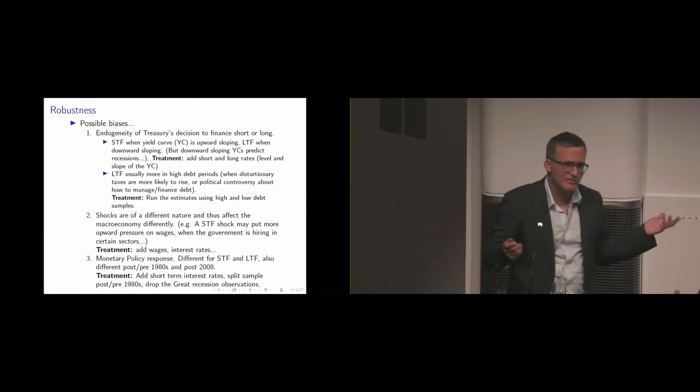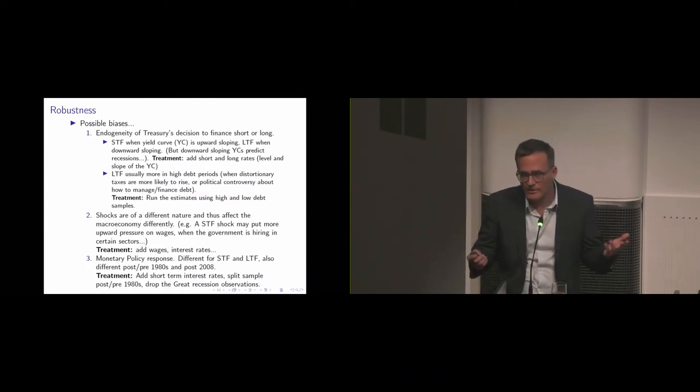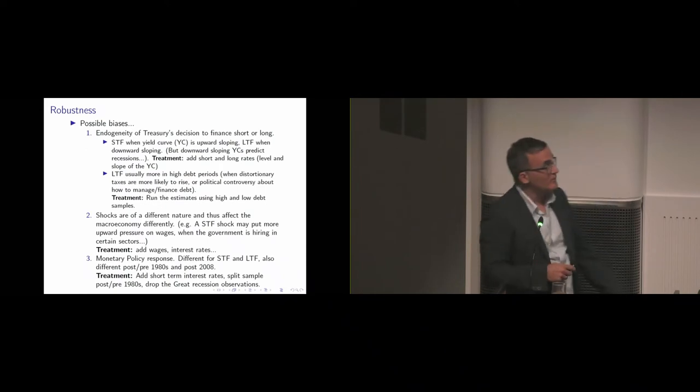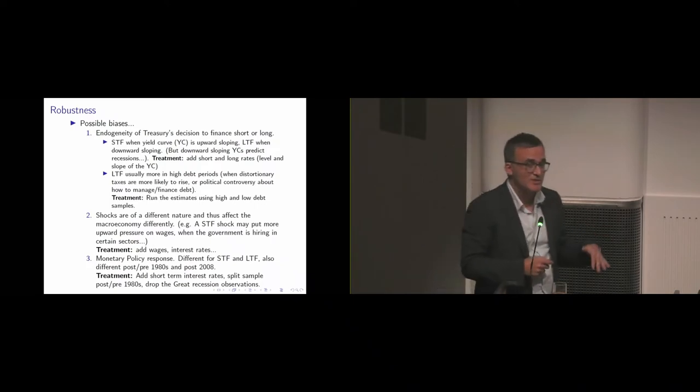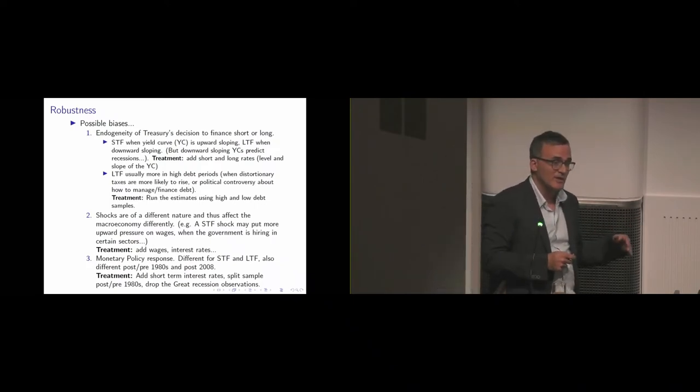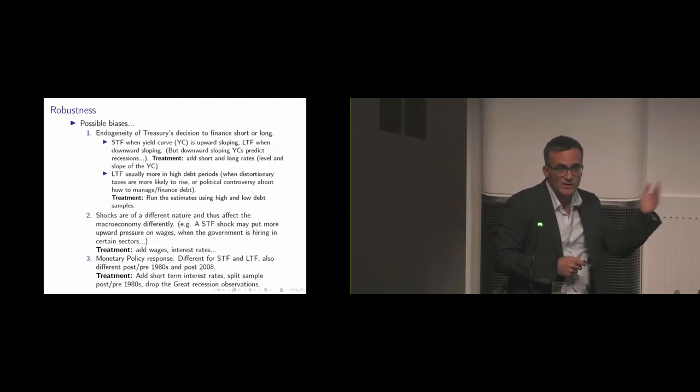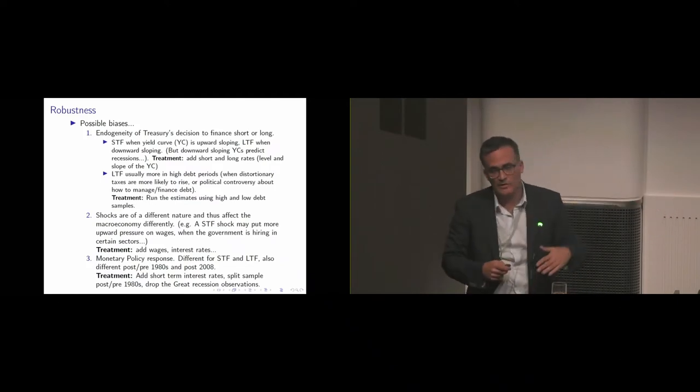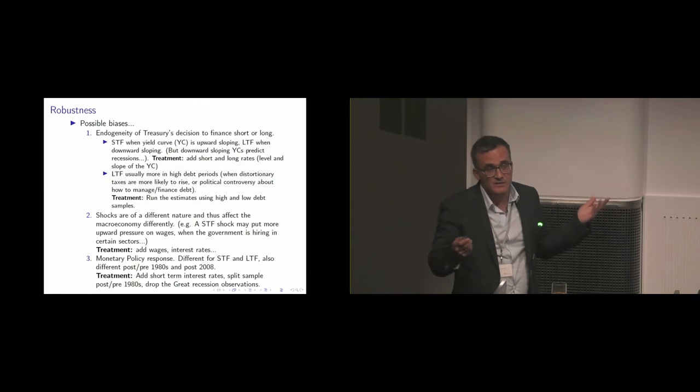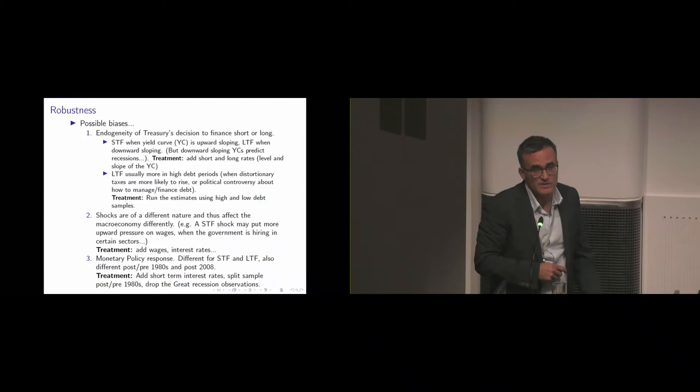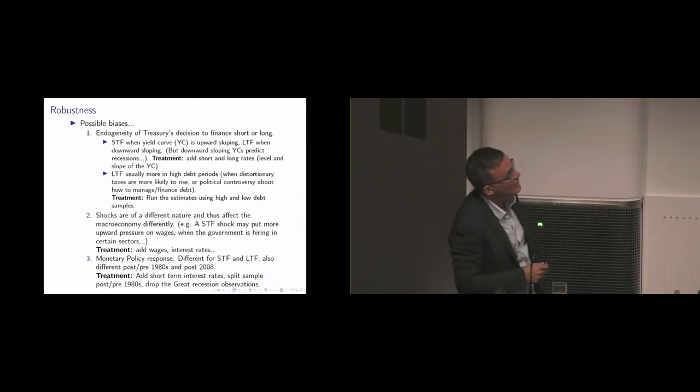Now, this exercise may suffer from many biases, so it's worthwhile considering robustness. There could be some endogeneity in the treasurer's decision to issue short or long-term debt. For example, you issue short when the yield curve is upward sloping because short is cheaper. But a downward sloping yield curve is also one that predicts a recession.